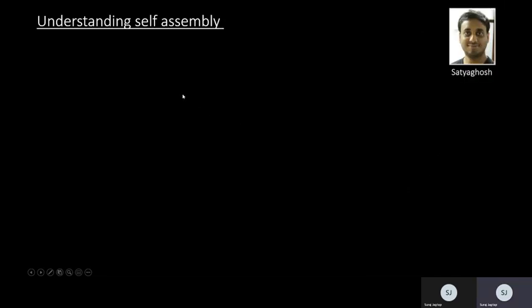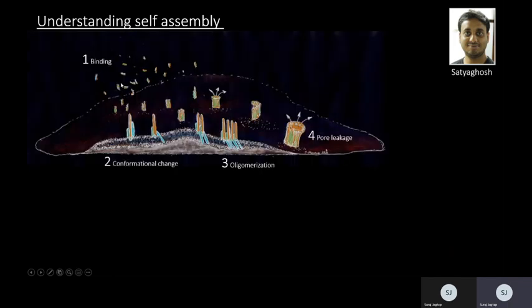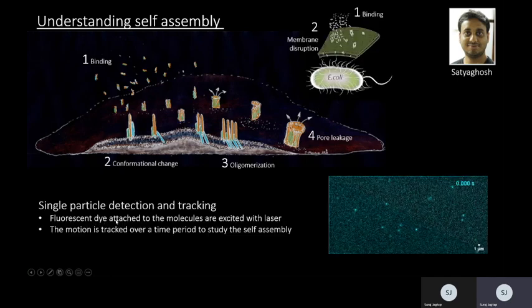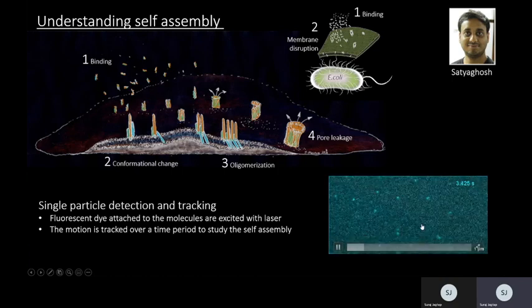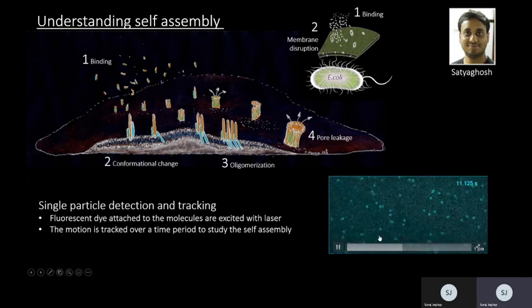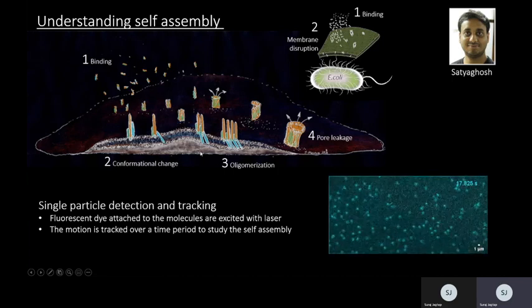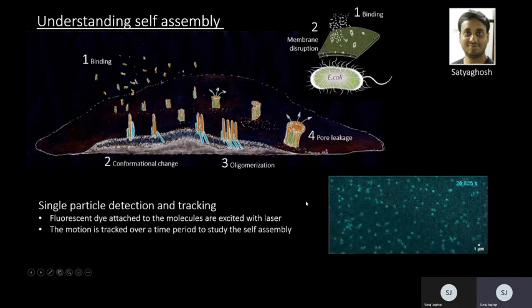Satyagosh from our lab is working on understanding the self-assembly of proteins. There are certain proteins like pore-forming toxins where these proteins bind to the membrane of the cell. Then they undergo some changes on the membrane and oligomerize to form a pore. Once the pore is formed, the internal contents of the cells are released into the outside, and that's how the cell dies. He attaches a dye to each molecule of the protein and visualizes the movement of that protein on the lipid bilayer membrane. Using chemical engineering techniques like diffusion coefficient, he finds out the mechanism by which it is binding and forming the pore.